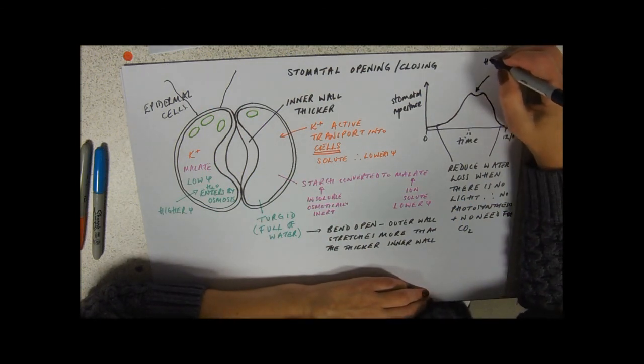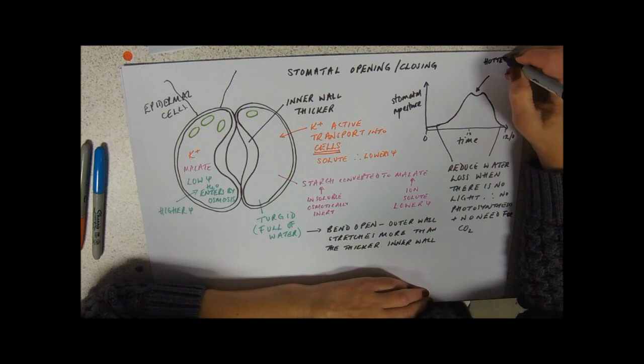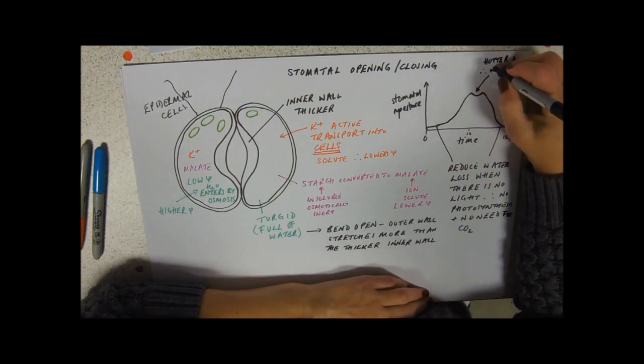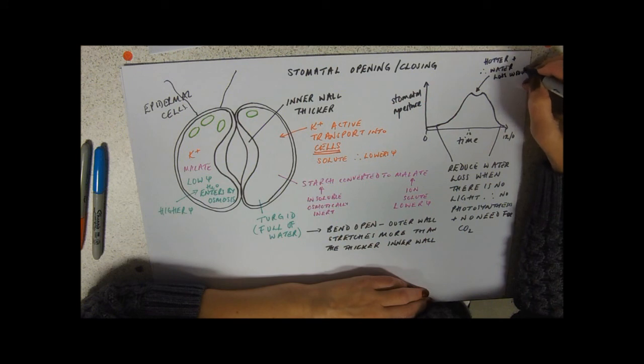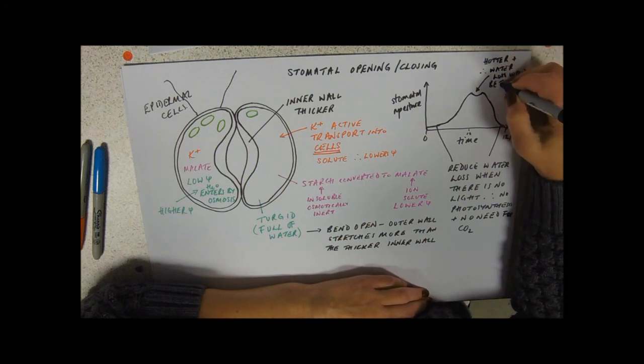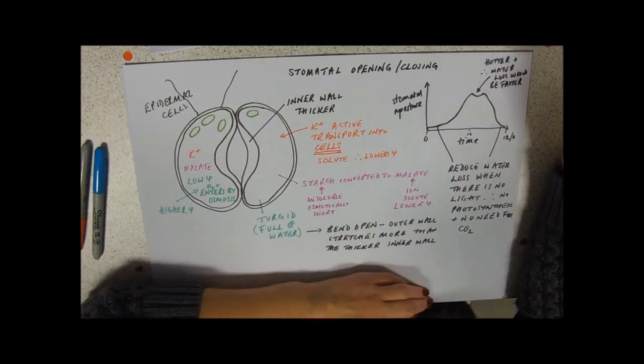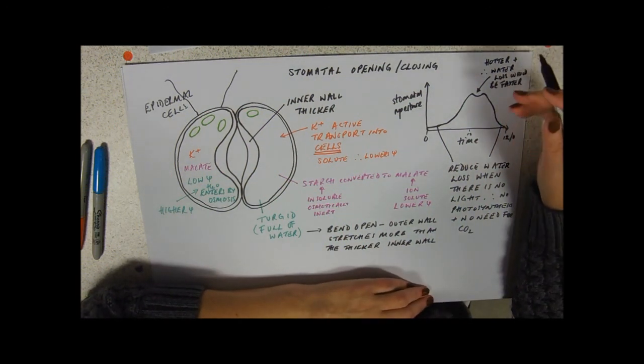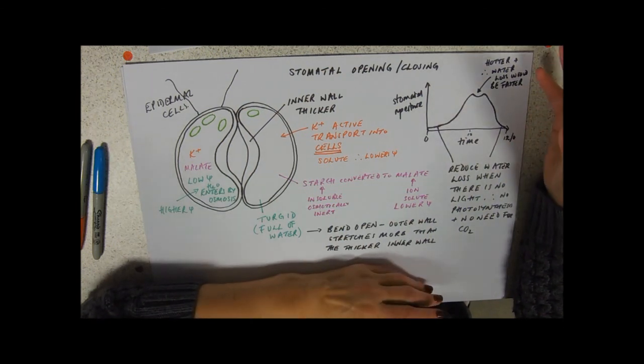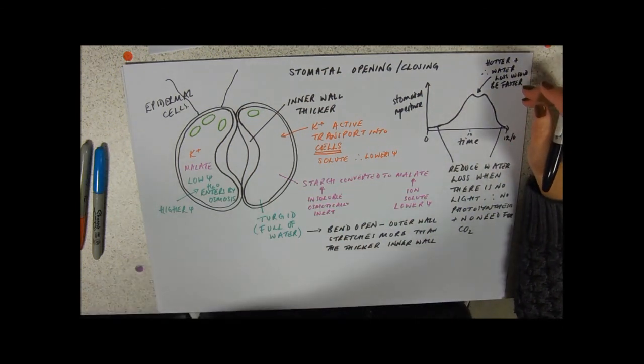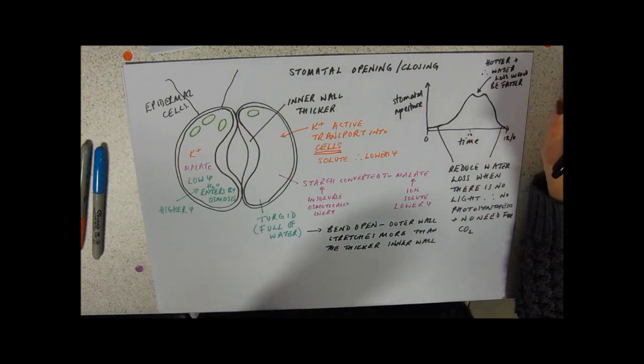So why this dip in the middle? This might be when it's hotter and therefore water loss would be faster, and again that's just to conserve water really. So we often see this little dip. Cloudy days they might not open quite as far because they need light in order to be able to open and photosynthesis.